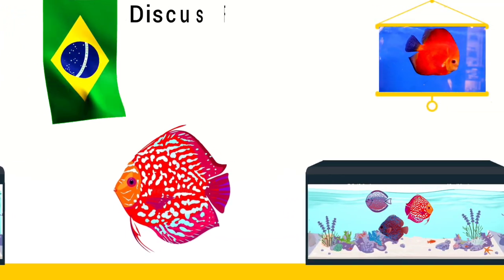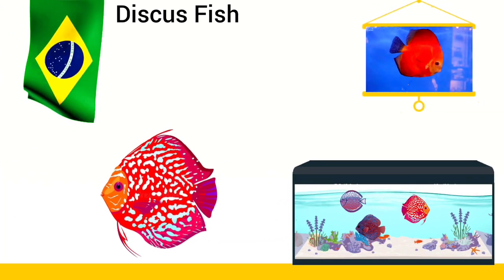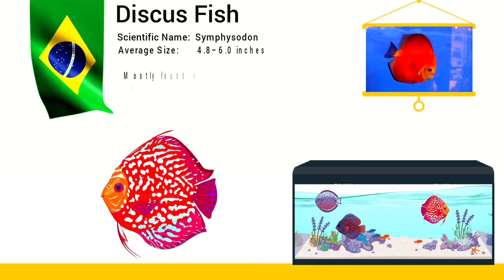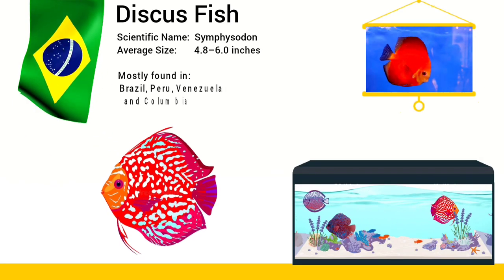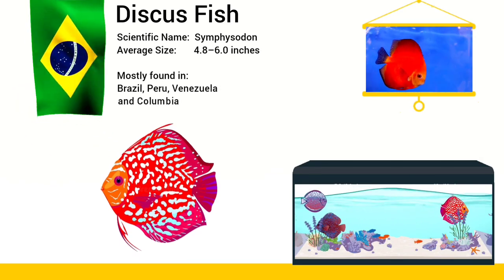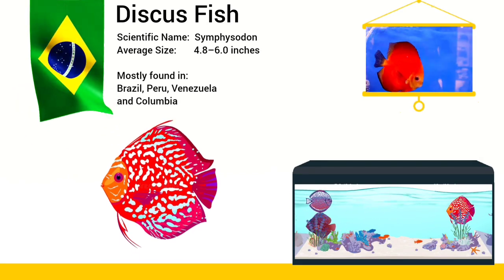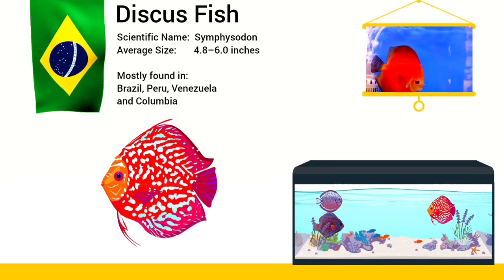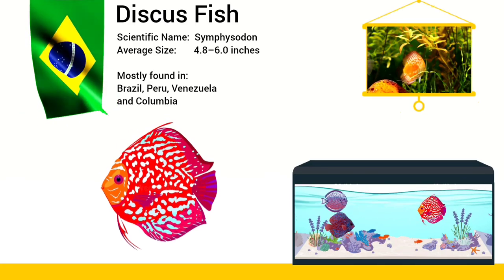The Discus Fish originates in South America, specifically the Amazon River and its tributaries, where this fish is found in the wild.